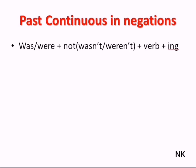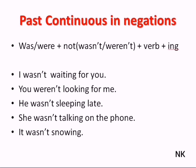Now let's have a look at the past continuous in negations. Again, we use the past simple form of the verb 'to be'—so either 'was' or 'were'—but we add 'not' to it, contracting it into 'wasn't' or 'weren't', plus the base form and '-ing'. I wasn't waiting for you. You weren't looking for me. He wasn't sleeping late. She wasn't talking on the phone. It wasn't snowing.